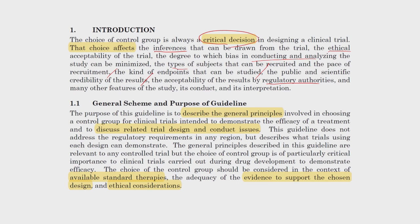ICH E10 — if you look at the purpose of the guideline, it says it provides general principles for making the choice of control group, and that design and conduct issues will be discussed. Choosing the control group, as I talked about, involves considering whether we have a standard therapy, the sufficiency of evidence in the design, and ethical aspects.